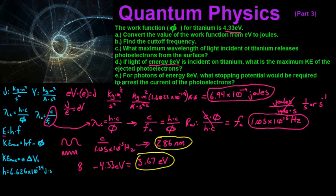For part E: for photons of energy 8 electron volts, what stopping potential would be required to arrest the current of the photoelectrons? That just means: how do we make the current go to zero? You take the negative of your KE max. The equation is KE max equals electron charge times delta Vs, where Vs is your stopping potential in volts. So you take whatever your KE max was — 3.67 electron volts — and instead of electron volts, it's just 3.67 volts. That makes your current go to zero. So for part E, the answer is 3.67 volts.